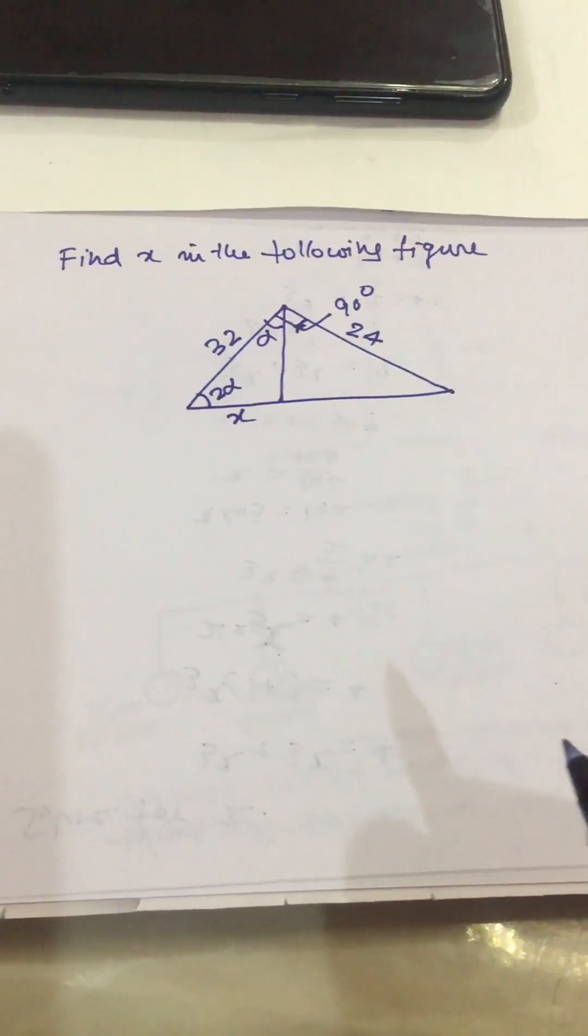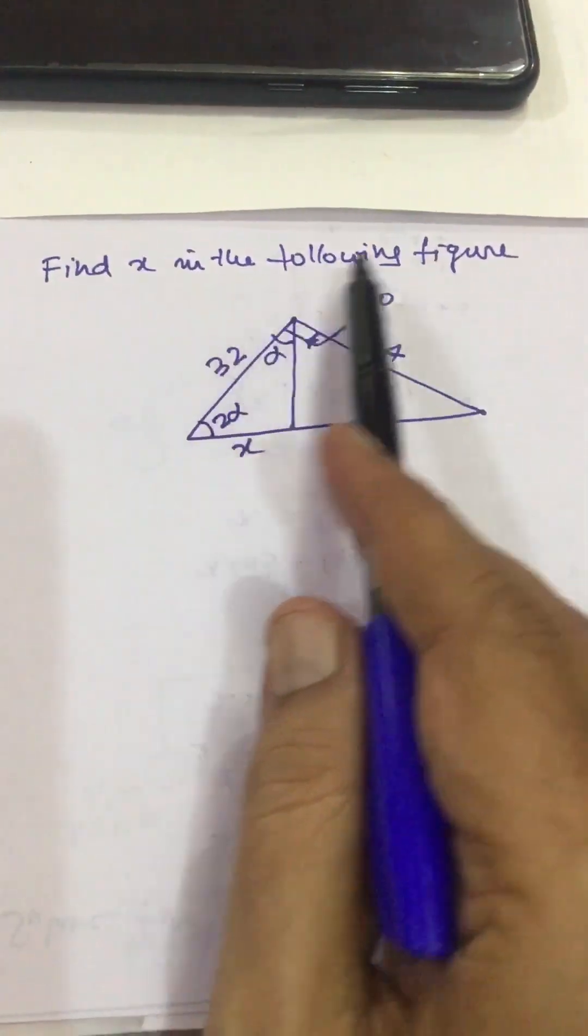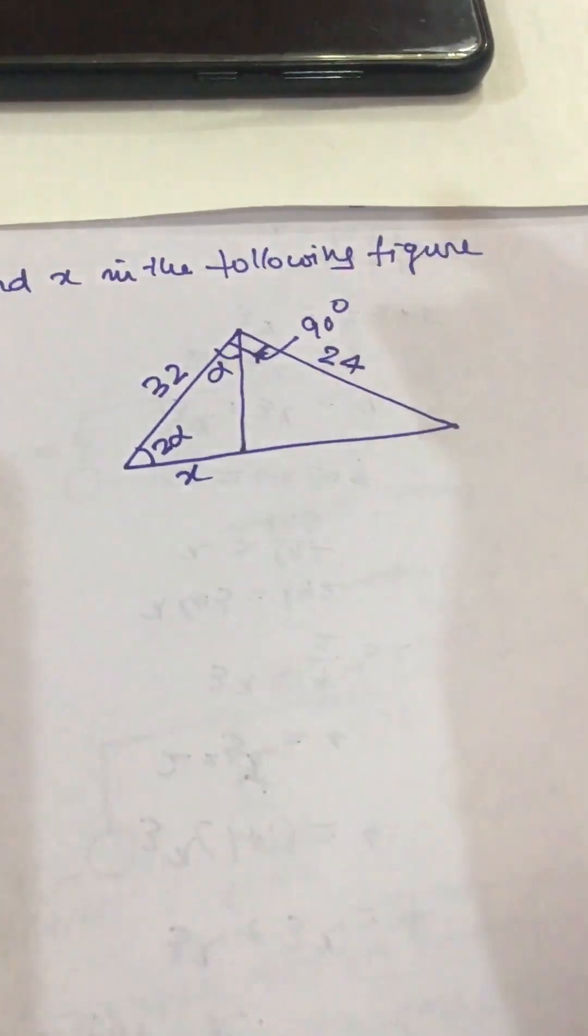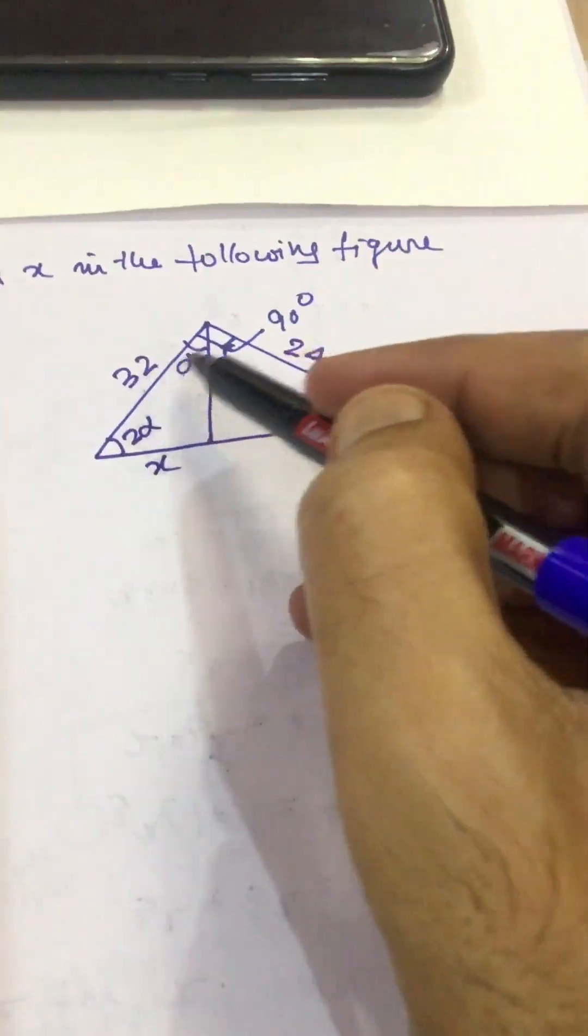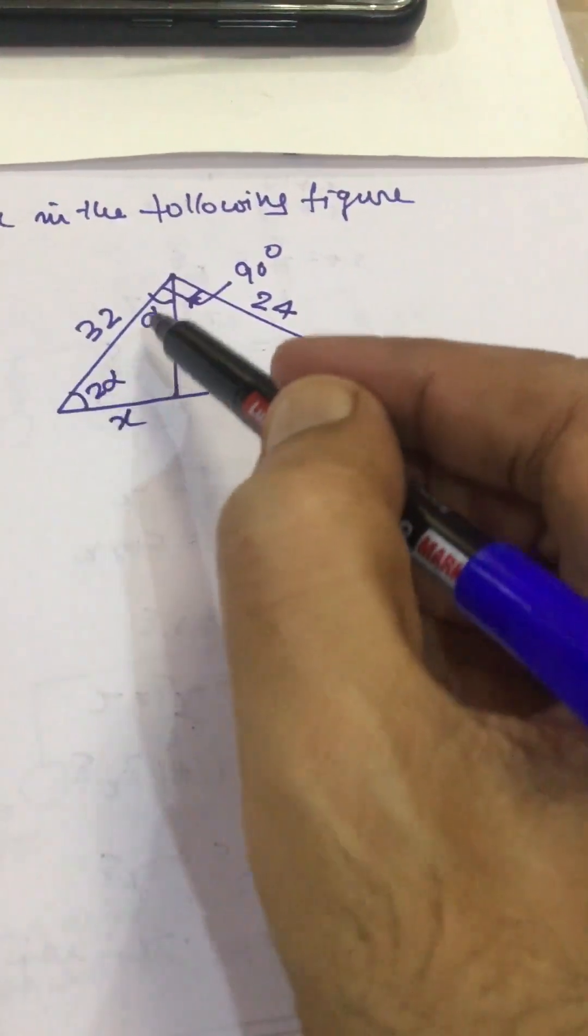Dear friends, in this video we will solve one triangle problem. The problem is like this: find x in the following figure. Here this side is 32, this side is 24, angle is 90 degrees, this angle is 2α, this is α.